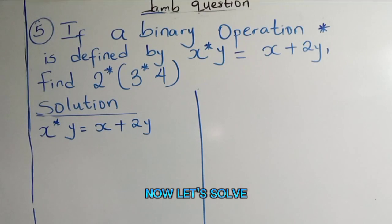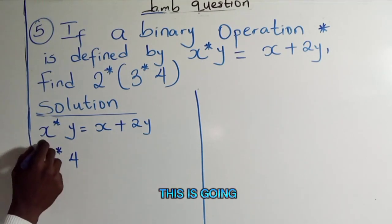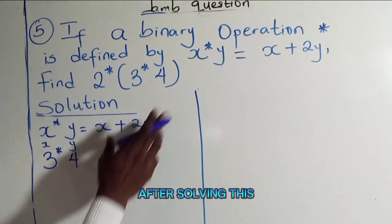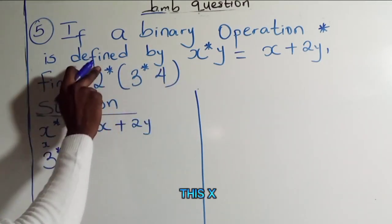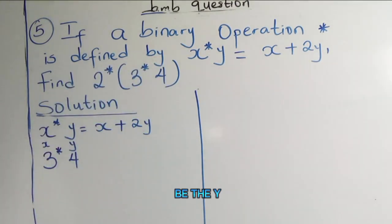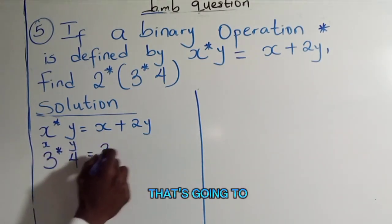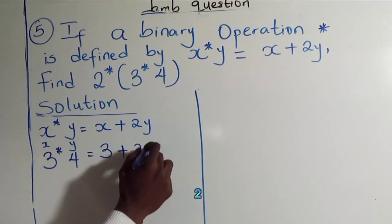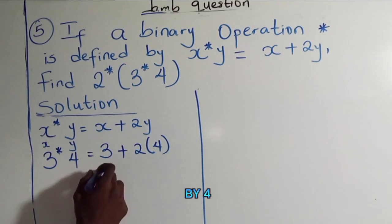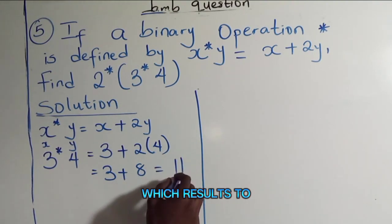Now let's solve 3 asterisk 4. Solving this means 3 is going to be your x and 4 is going to be your y. So x is 3, that's going to be 3 plus 2 multiplied by y which is 4. And 2 multiplied by 4 gives us 3 plus 8, which results in 11.